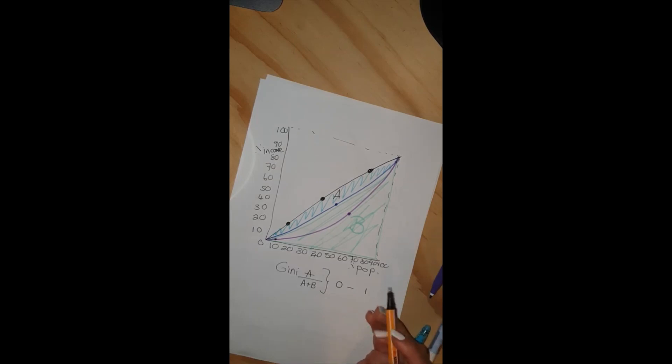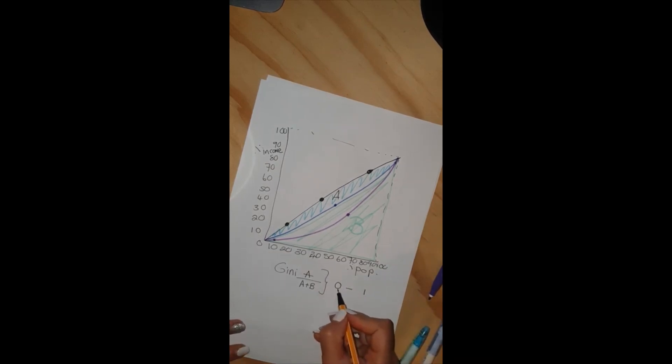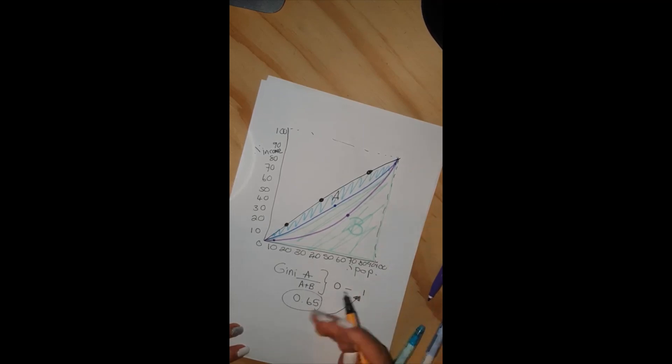You will always have a country with a value between 0 and 1. For instance, South Africa's Gini coefficient is 65% or 0.65. This value is closer to 1, which means that South Africa has a more unequal distribution of income.